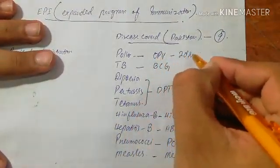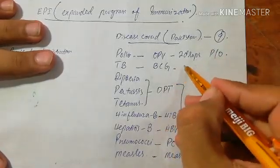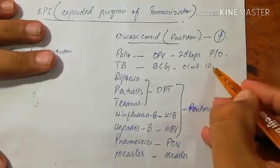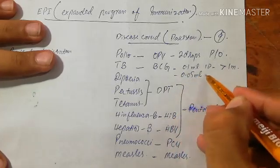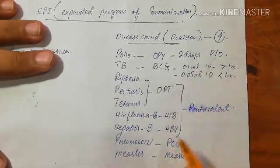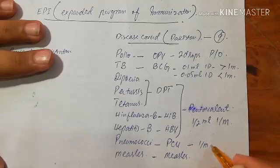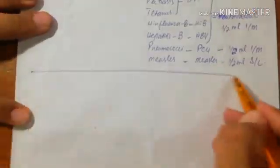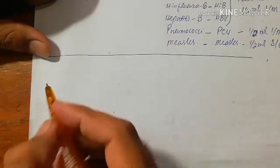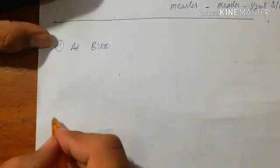Coming towards the dosage of these vaccines: OPV is given 2 drops per oral. BCG is given 0.1 ml intradermally if the child's age is greater than one month, and 0.05 ml intradermally if the age is less than one month. The pentavalent dose is 0.5 ml intramuscular, PCV is 0.5 ml intramuscular, and measles is given 0.5 ml subcutaneously.